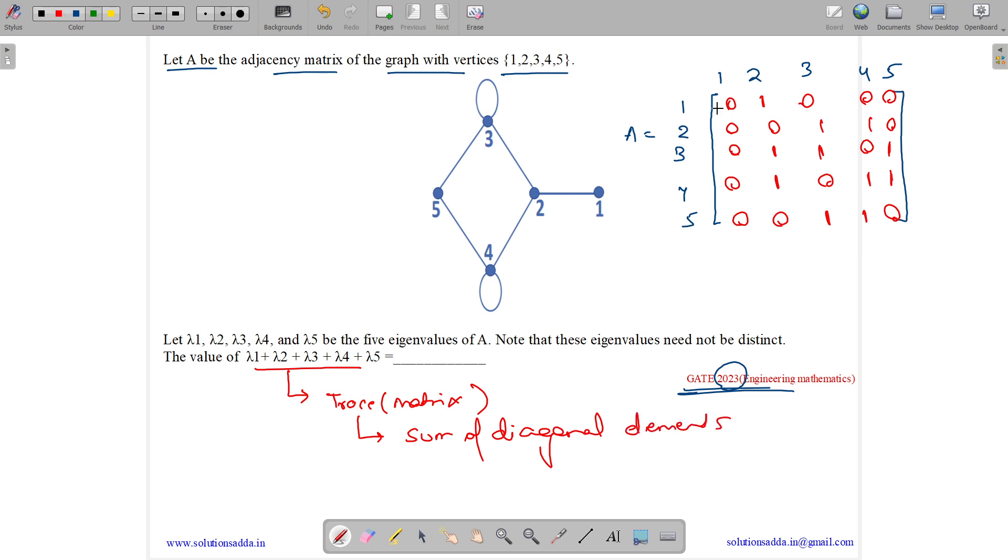So what are the diagonal elements sum? 0 plus 0 plus 1 plus 1 plus 0. So the answer is 0 plus 0 plus 1 plus 1 plus 0. So lambda 1 plus lambda 2 plus lambda 3 plus lambda 4 plus lambda 5 is 2.